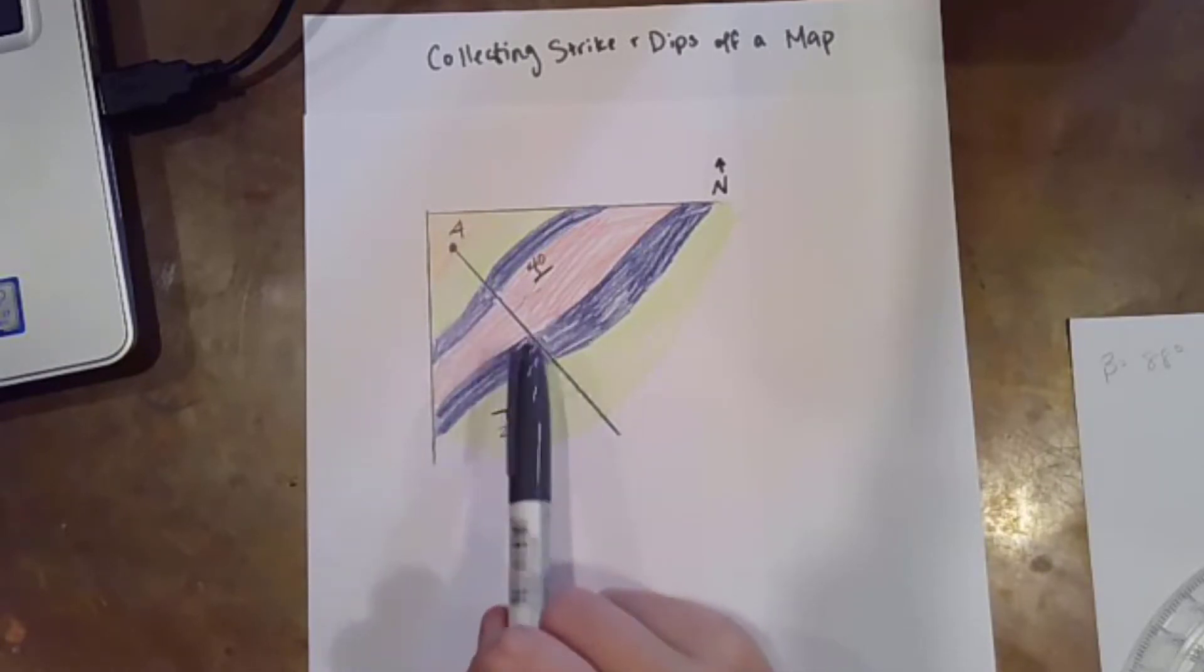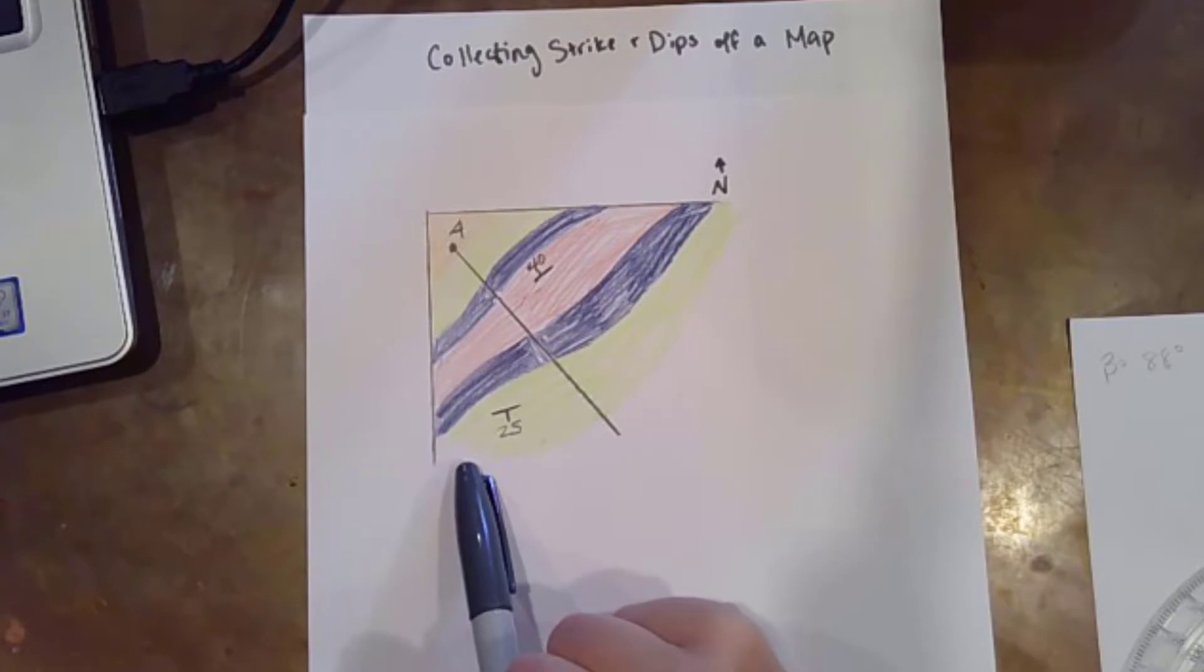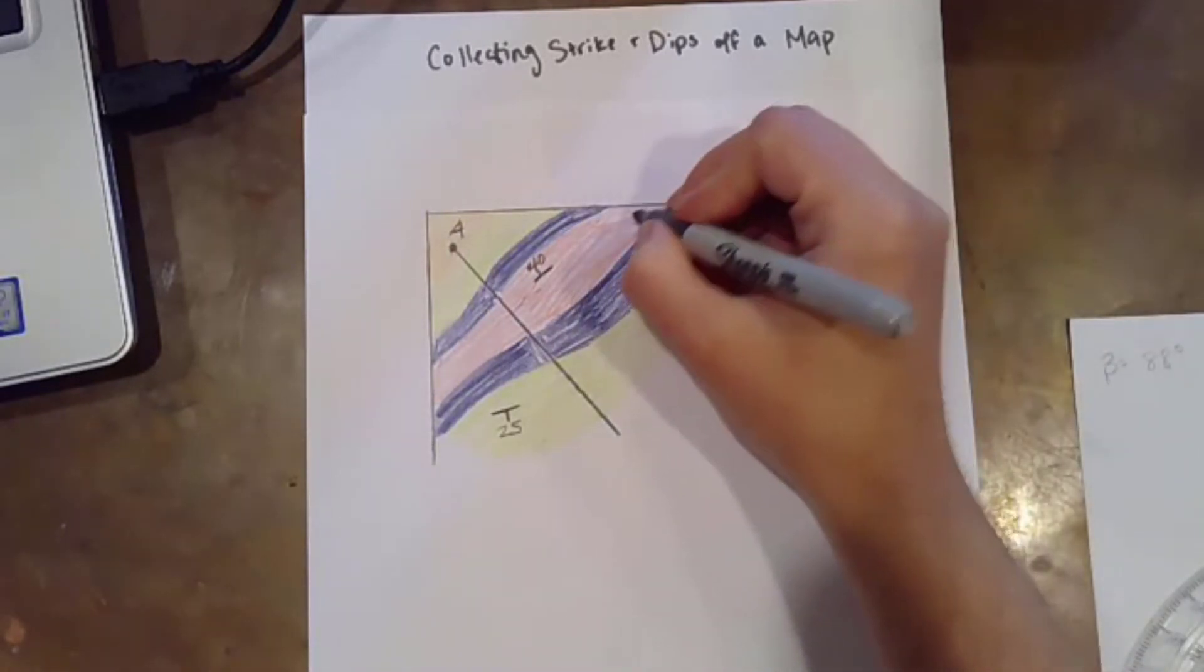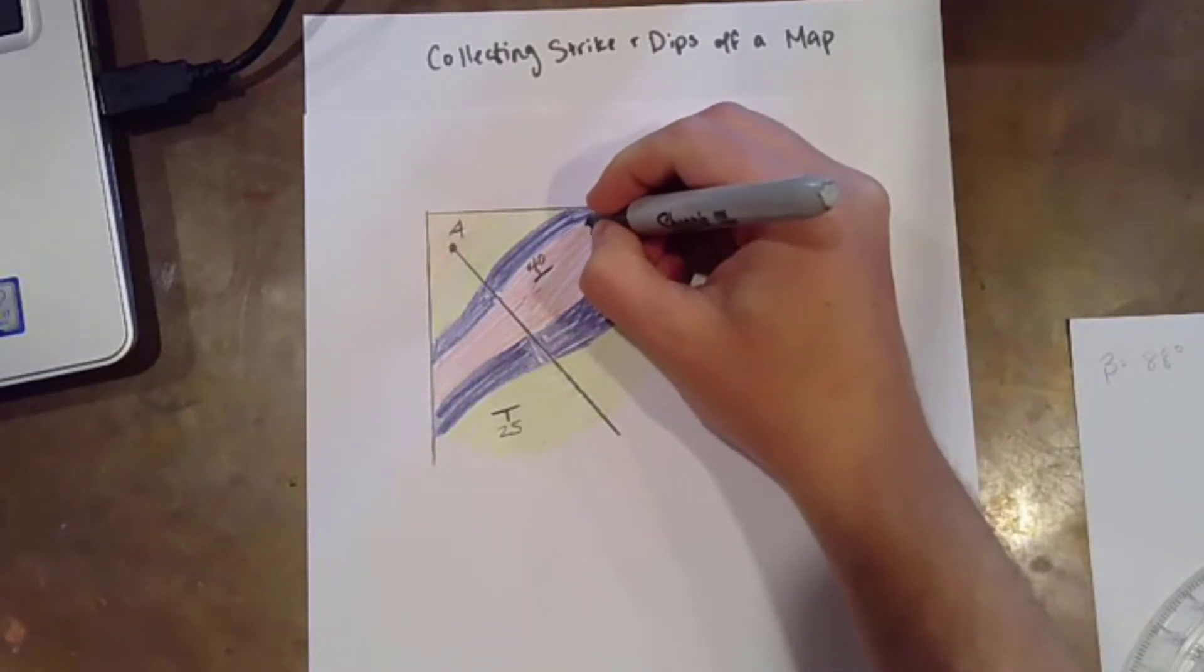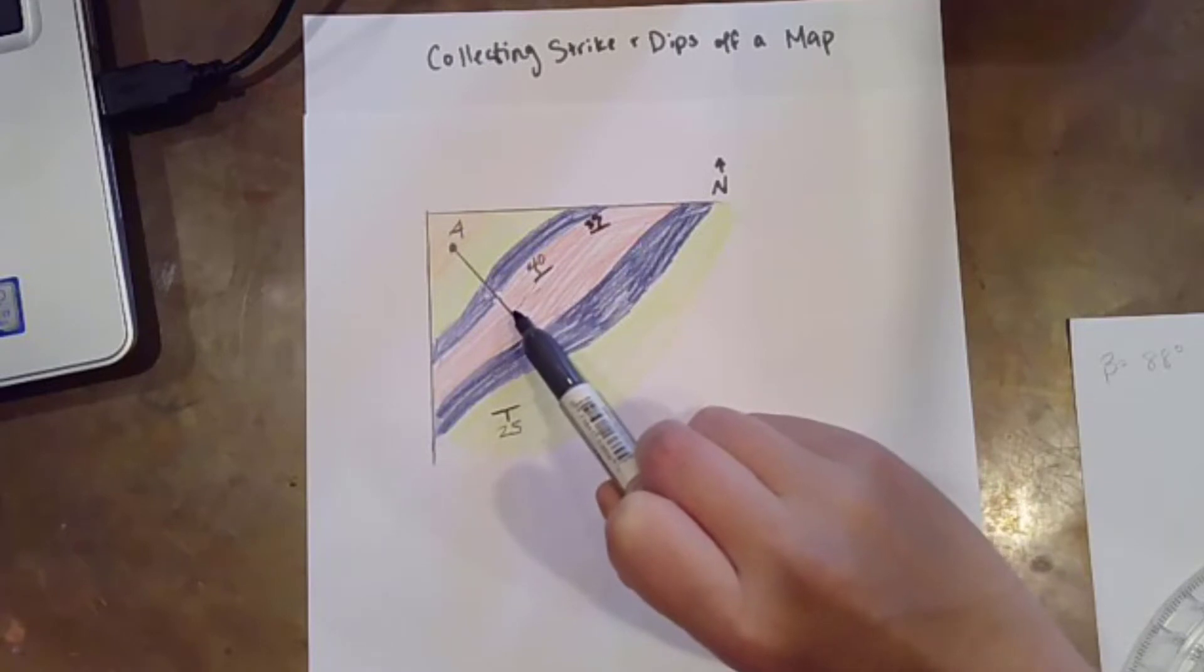Okay, now assuming that you've already collected your contacts and your topographic information, you're going to be ready to start collecting your strike and dips, or your orientation measurements. So what you're going to do is you're going to try and select orientation measurements that kind of hug that line that you've created. For example, let's say that there's a strike and dip over here that's 35. I'm going to select this 40 over this 35 because the 40 is closer to my profile line.